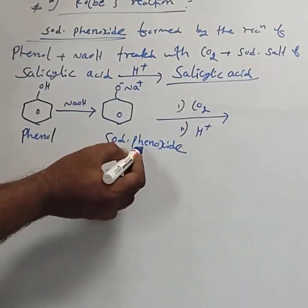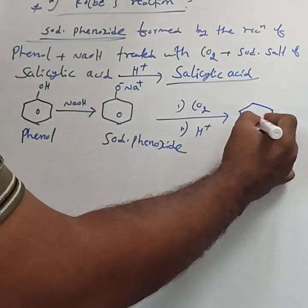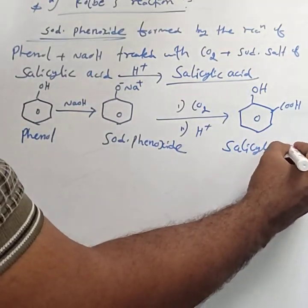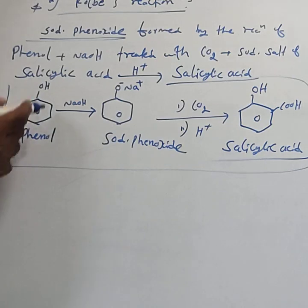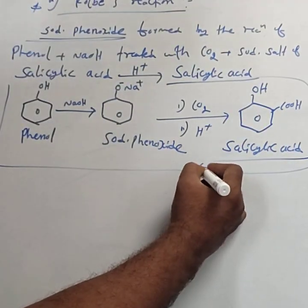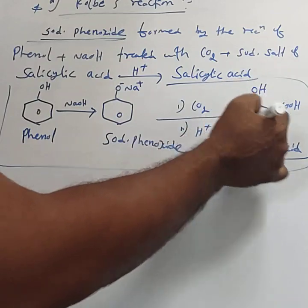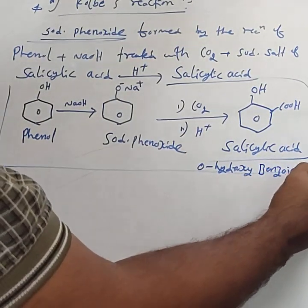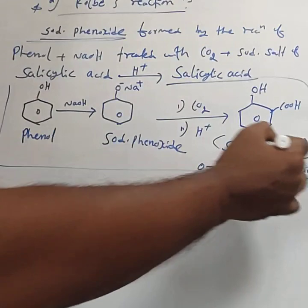First step: sodium phenoxide treated with carbon dioxide followed by acidification. Directly, the product is OH–COOH, which is called salicylic acid. Just write this reaction and you get full marks. Salicylic acid is also known as ortho-hydroxybenzoic acid — if the OH is removed, the remaining group is benzoic acid, hence ortho-hydroxybenzoic acid — commonly called salicylic acid.